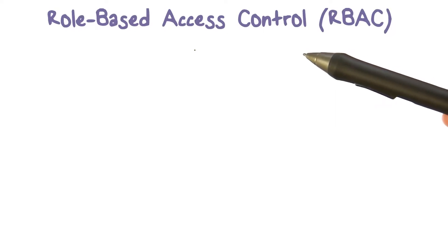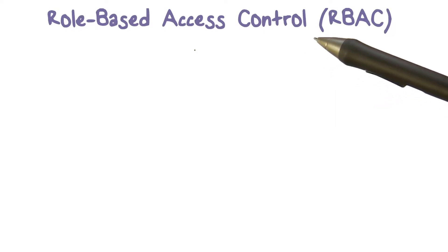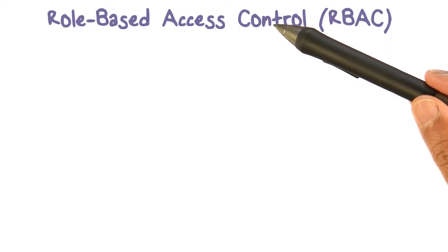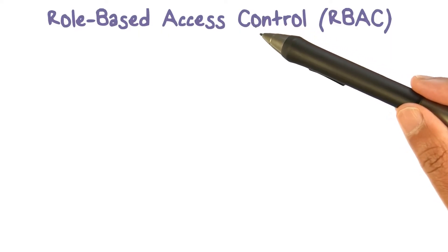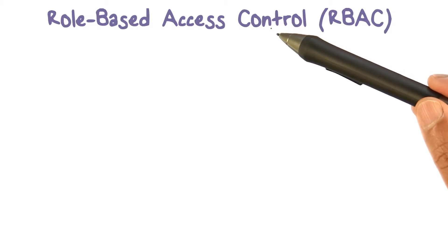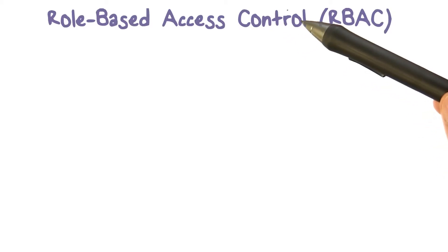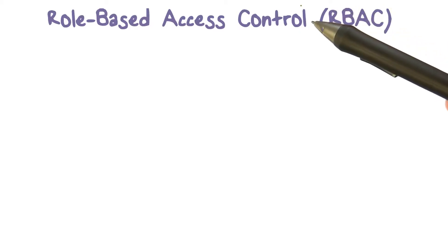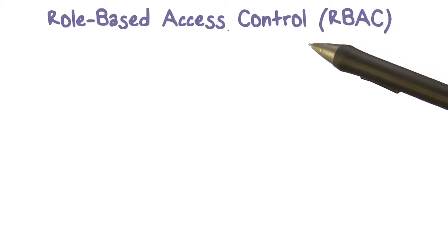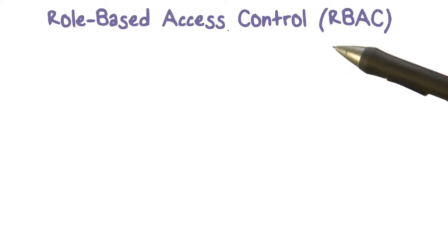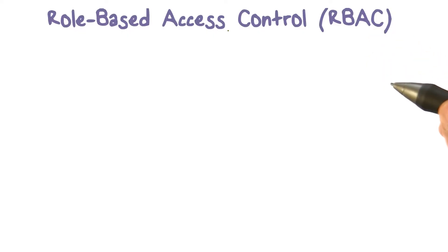In some systems, we have what is called role-based access control. A role is sort of what you do — your function, perhaps. That may govern what kind of files you can access. If you're in human resources, payroll, or a different department, the set of files you can access would depend on your role in the organization. So there is role-based access control, or RBAC, that is implemented. We'll spend just a couple of minutes talking about it.